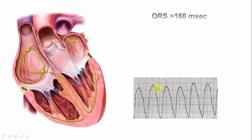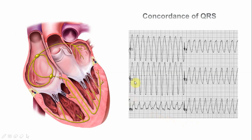Another important characteristic feature of VT is the width of the QRS complex. By definition the QRS is more than 100 ms for wide complex, but if the QRS width is more than 160 milliseconds this is very suspicious for VT. In this particular patient, for example, the ventricular rate is almost 150 beats per minute, making VT the most likely diagnosis.